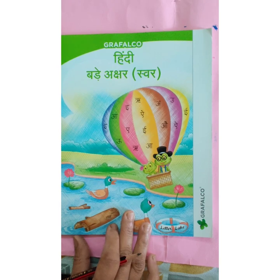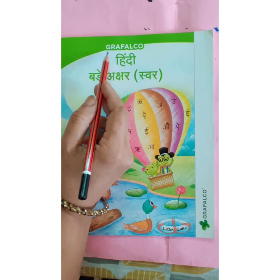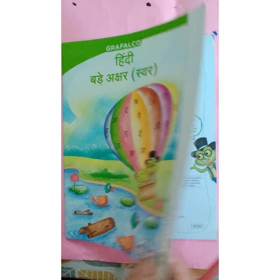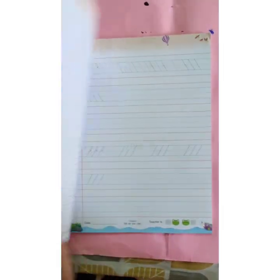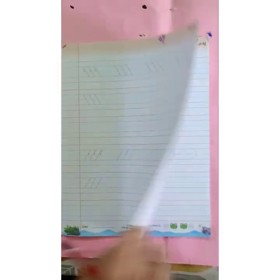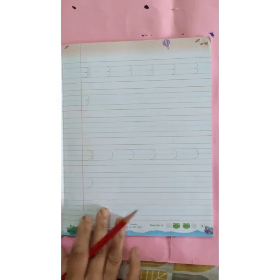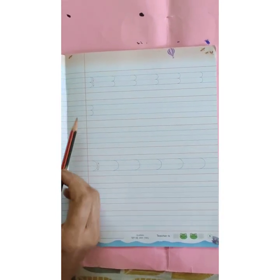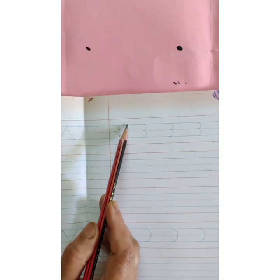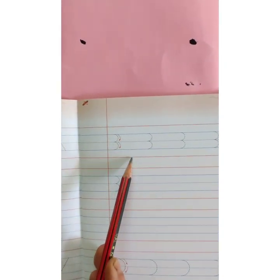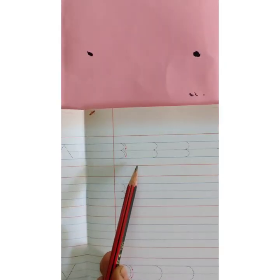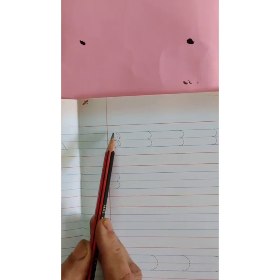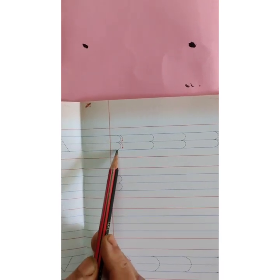This is your Grafalco Hindi Swar book. Open page number 5. In Hindi, we use a 5-line book: 1, 2, 3, 4, 5. But we write only in 3 blue lines: 1, 2, 3.